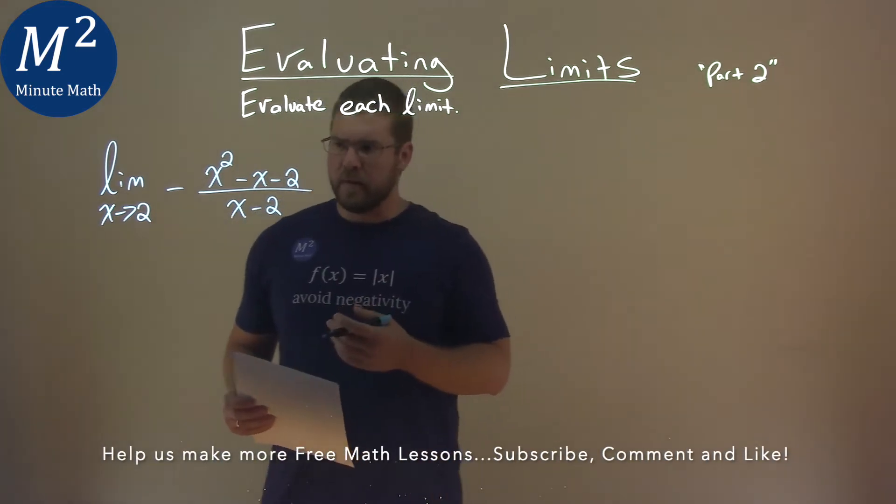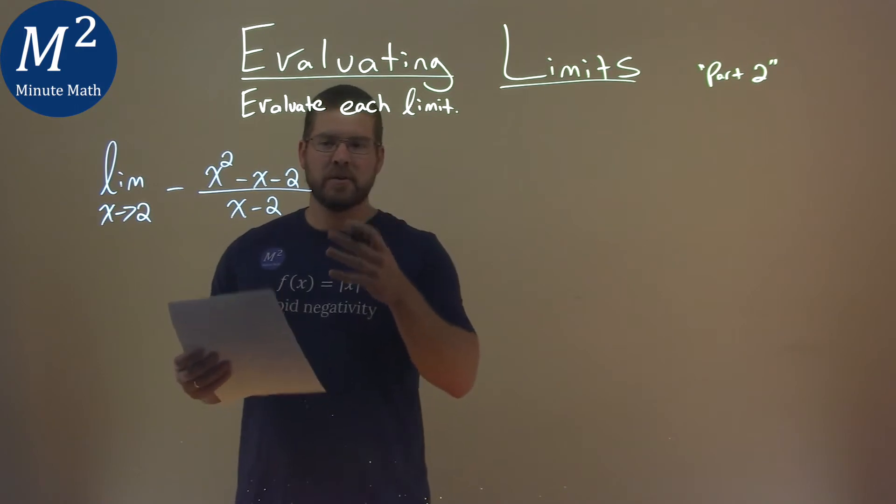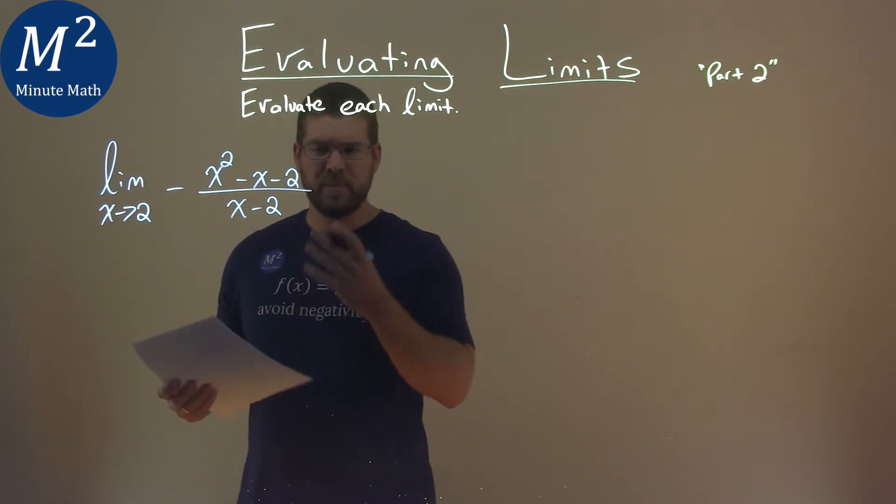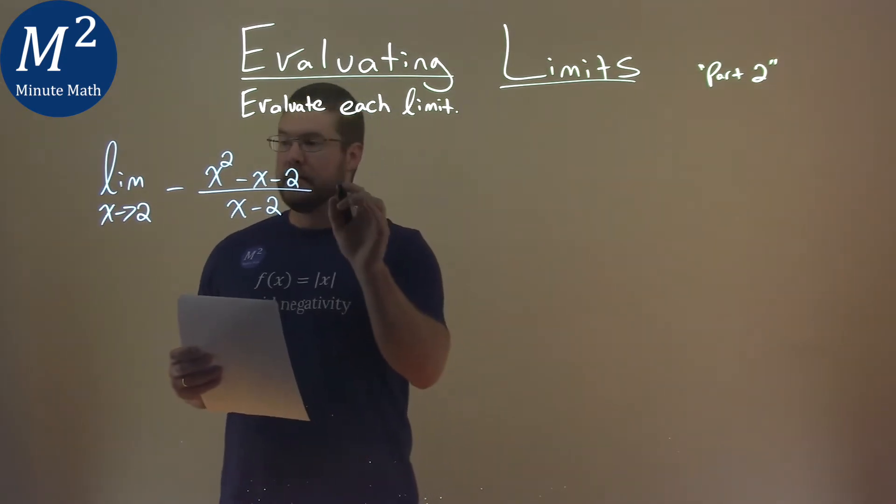Whenever I see limits like this, I'm always looking for how can I maybe factor to cancel something out of the denominator, because in reality here, we put a 2 in the denominator, it's divided by 0. That's an issue.